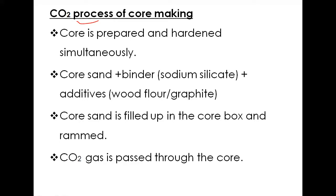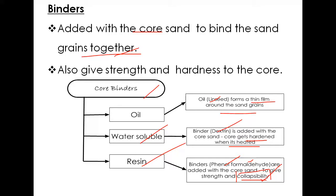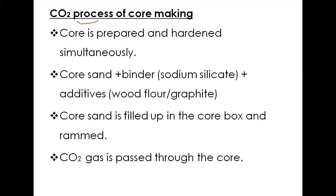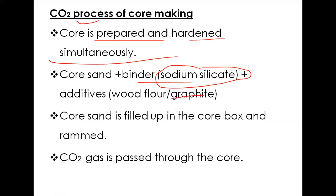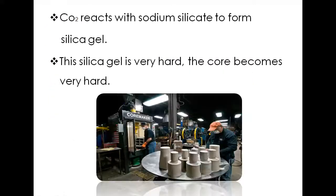Now we discuss the CO2 process of core making. In the conventional process, the core is prepared separately and then kept in an oven for hardening — a separate process. In the CO2 process, both preparation and hardening are done simultaneously in the same place. The core sand binder used is sodium silicate, along with a wood flour or graphite additive. The core box is filled with core sand and rammed, and then CO2 gas is passed through.